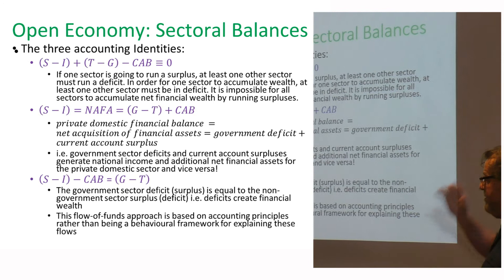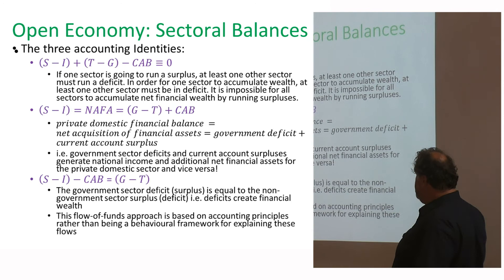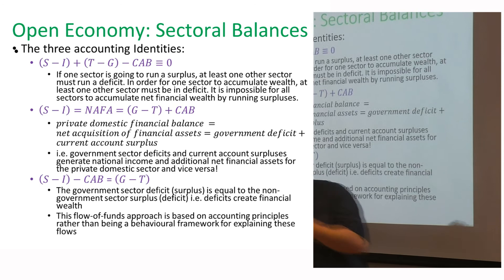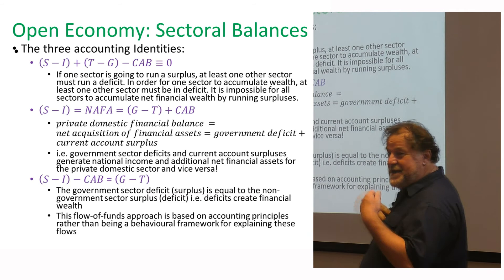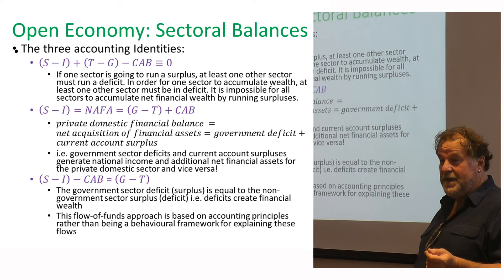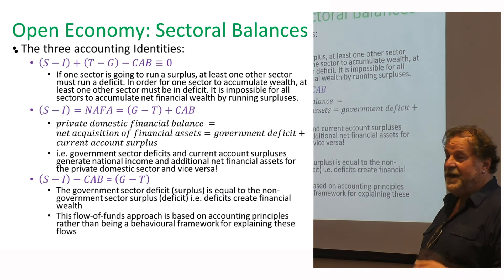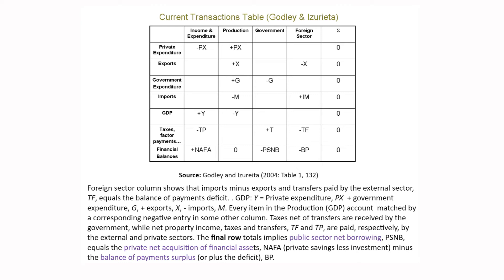These are the sectoral balances — you've got three accounting identities. The important one shows that government deficits and current account surpluses generate net financial assets for the private domestic sector. This is based on accounting principles rather than a behavioural framework. Wynne Godley was one of the first to talk about sectoral balances. His famous Levy Institute paper 'Seven Unsustainable Processes' predicted the dot-com slump in 2000-2001 and he also predicted the global financial crisis on the basis of sectoral accounts and stock-flow relationships.